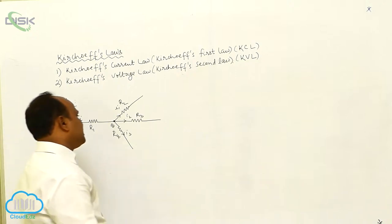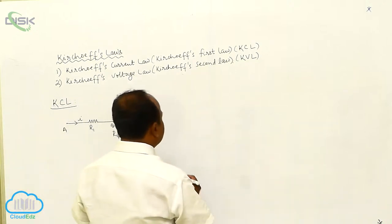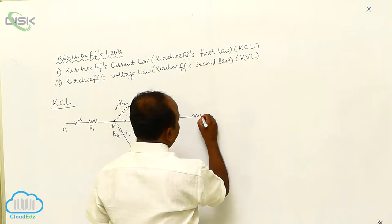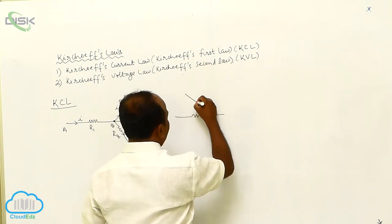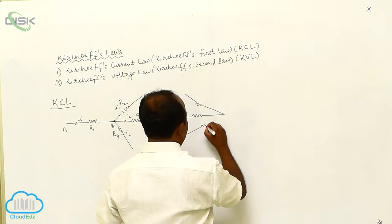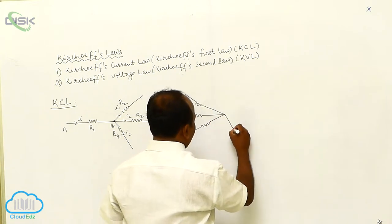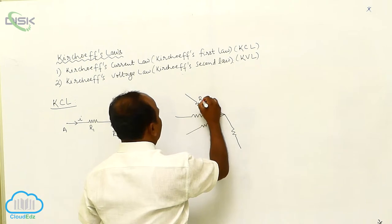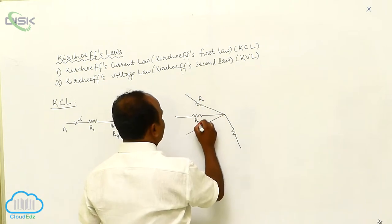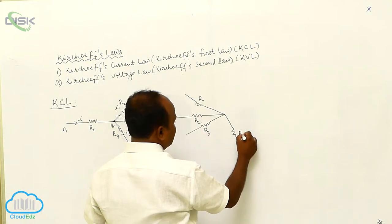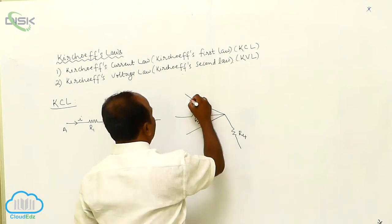Suppose, let us consider there is another circuit. This is the resistance R1, this is the resistance R2, this is the resistance R3, and this is the resistance R4. Through the current, through the resistance,